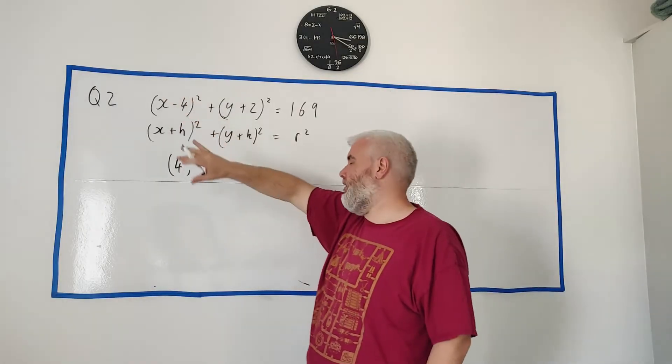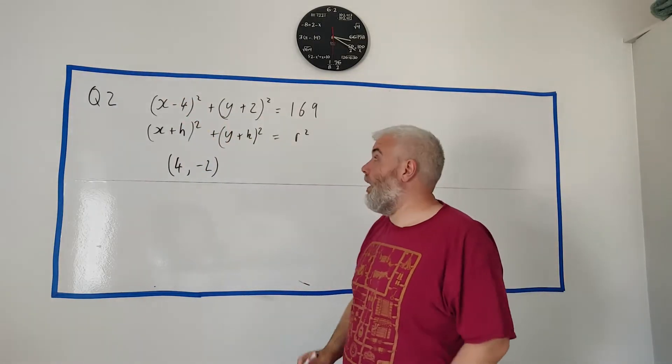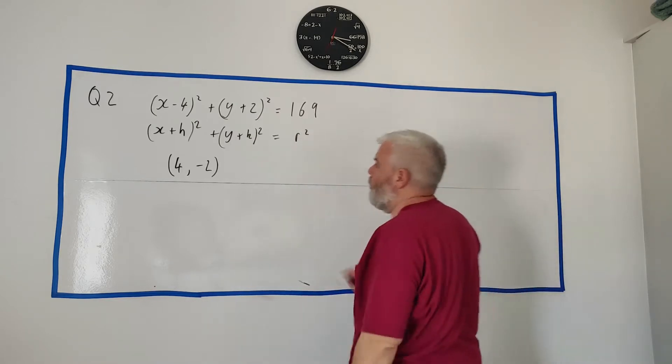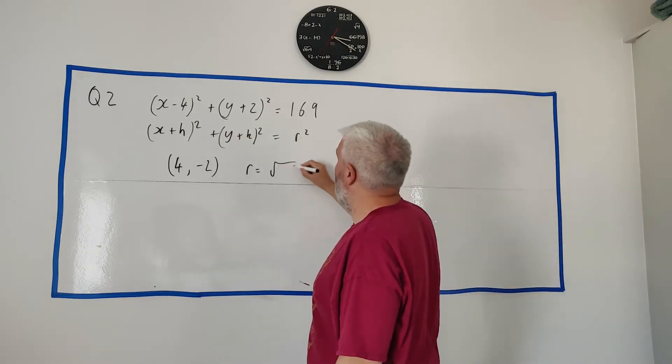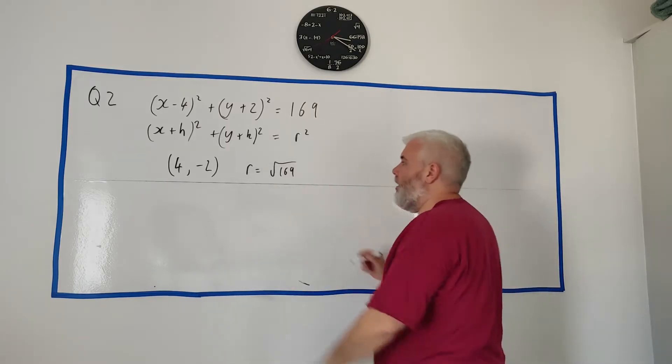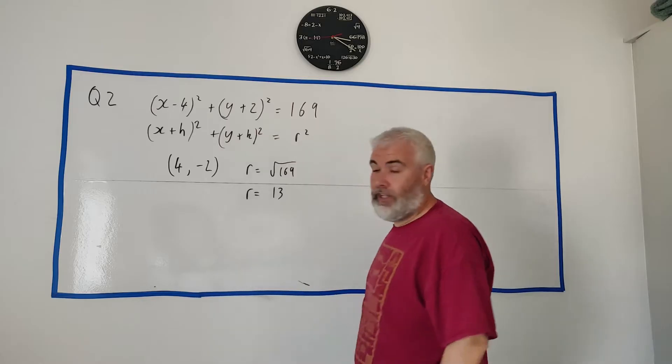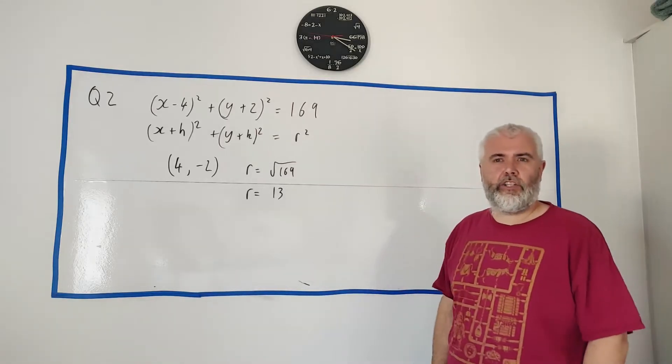So when it looks like this, if it looks different, you're going to have to make it look like this first. And R is equal to the square root of 169. Put that in a calculator. In this case, it does come out evenly. It comes out as 13. So that's A part 1.